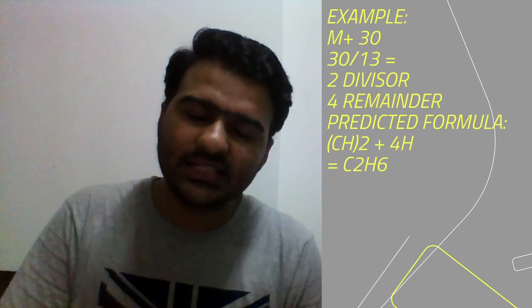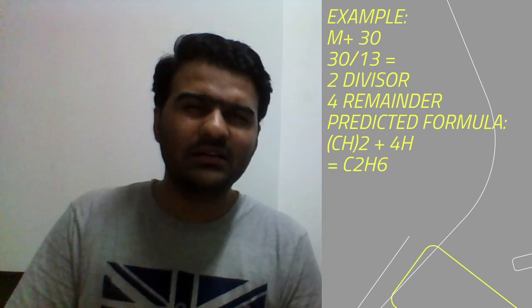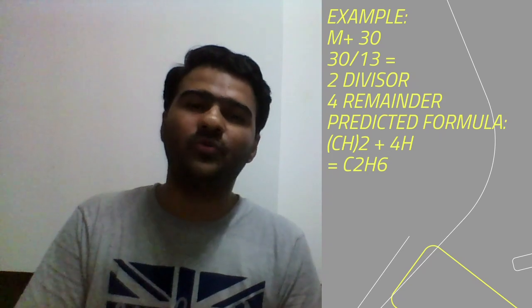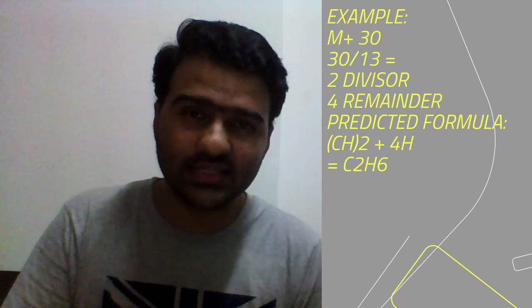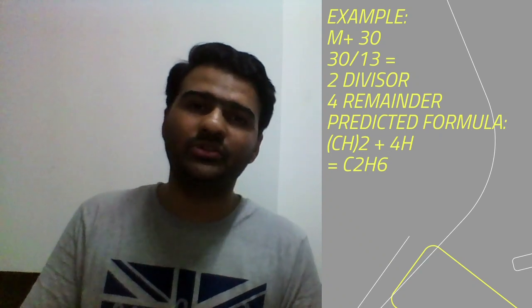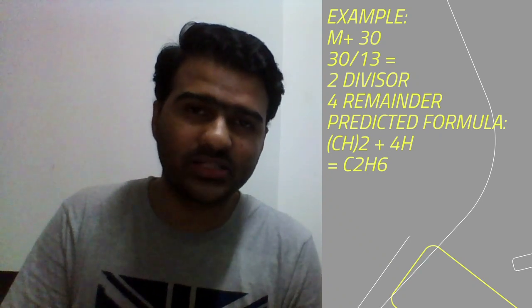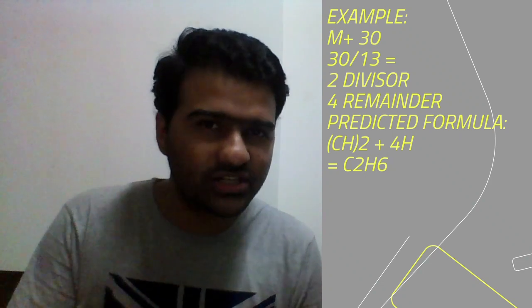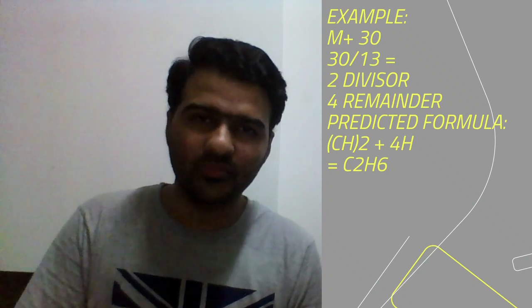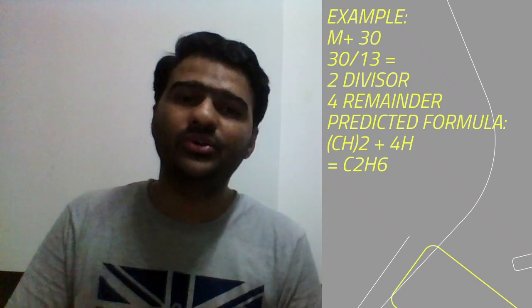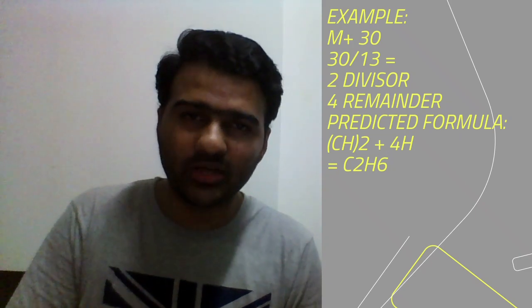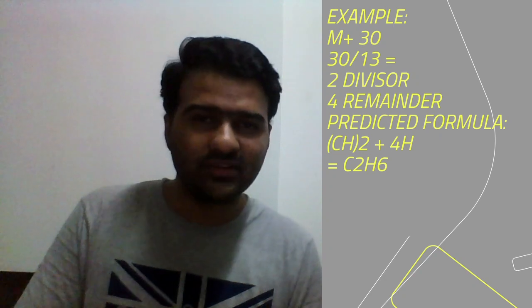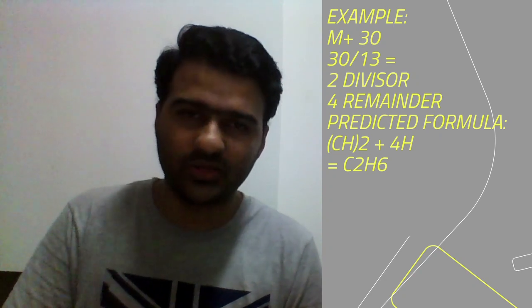Is there a way to understand whether the predicted formula is correct or incorrect? The answer is partly yes. You can do that by finding out what is called the number of double bond equivalents. You have a formula to find out the number of double bond equivalents of an organic compound based on its molecular formula. If you get a whole number, you're okay. But if you get a fraction, you need to rework your molecular formula — because double bond equivalents cannot be a fraction. It helps you sift out those predicted formulas which are not acceptable.